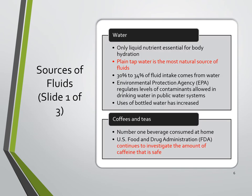Water is the only liquid nutrient that is essential for body hydration — you don't need any other type of liquid to hydrate your body. Plain tap water is the most natural source of fluids and the best way to get water. It contains natural mineral content, often has fluoride, and typically comes at the right pH level.